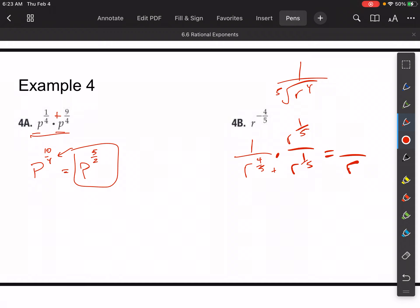And then on top, I have r to the one-fifth times one, which is r to the one-fifth. By the way, don't try to take an r out of this. We have different roots. This is like the same thing as the fifth root of r over r, and you cannot simplify that any further.